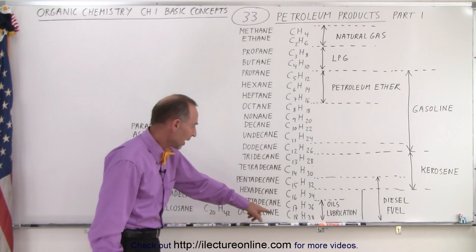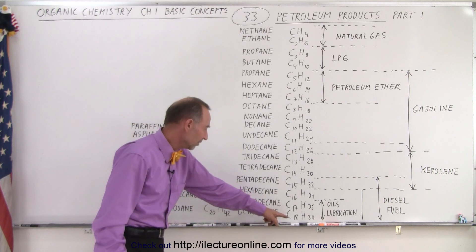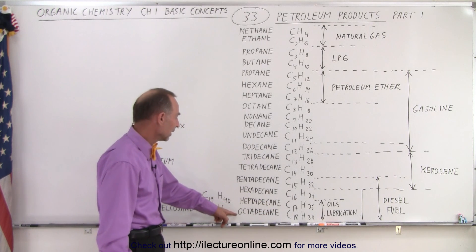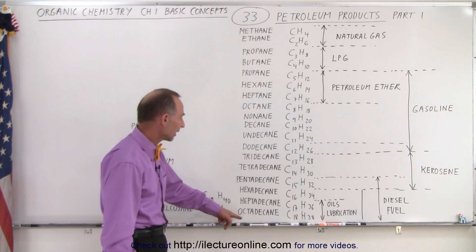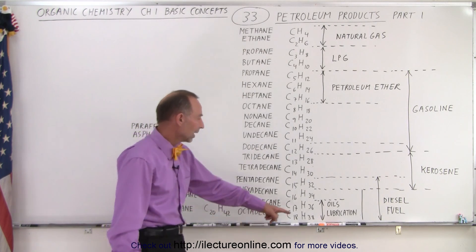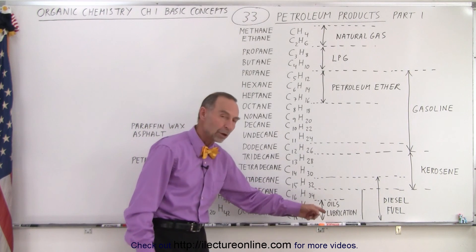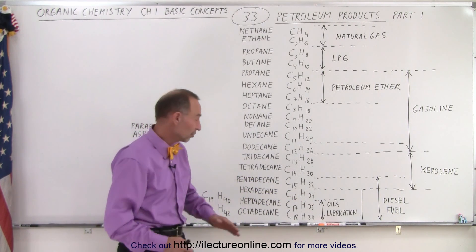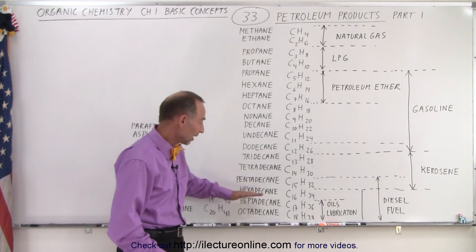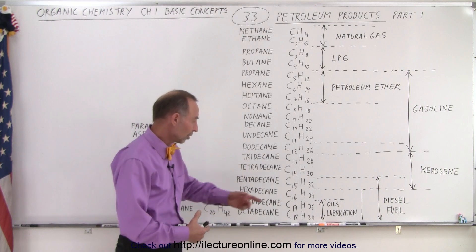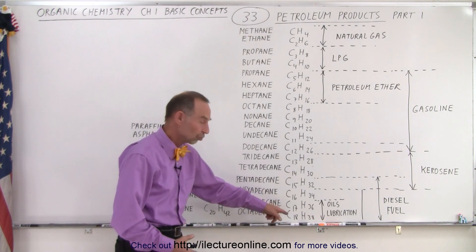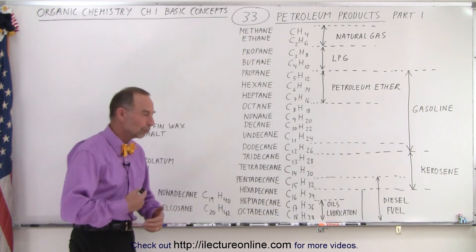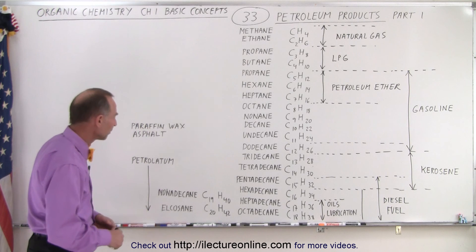Notice that if you go all the way down to C17 and C18 — heptadecane and octadecane — we have what we call lubrication oil. If you want oil in your engine, you can see that these compounds have much longer chains, they're not as flammable, and so they can be used for lubrication.